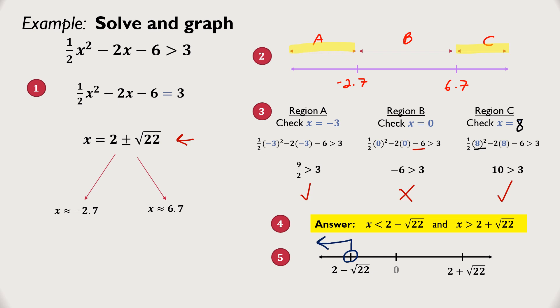Less than is to the left side. On the other end, you've got an open circle because we don't want 2 plus radical 22. That goes to the right side. And there's my solution, my answer, and my graph.